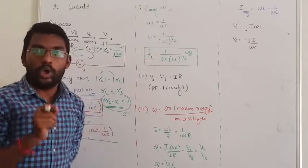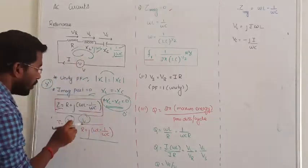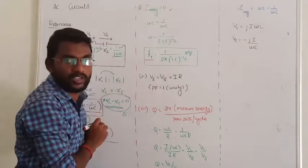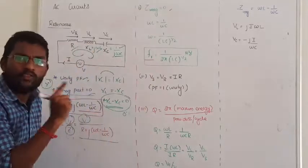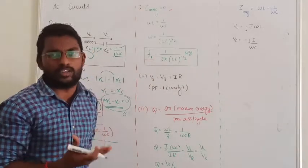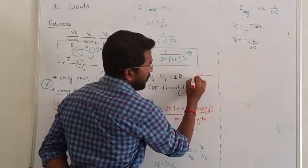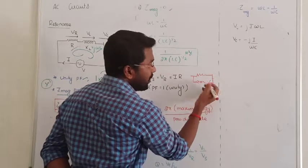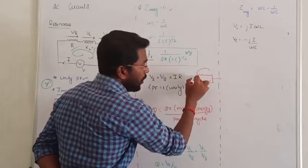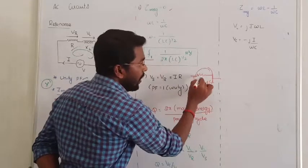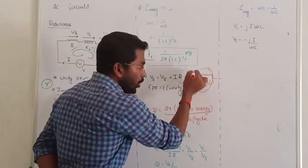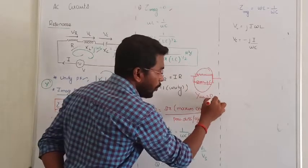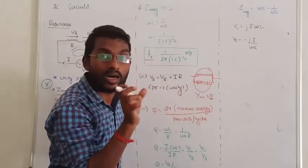Now, one more thing. From what we know about a series RLC circuit, total impedance gives us this expression for resonant frequency. For a parallel RLC circuit, that formula is different — it is not the same. In the parallel case, we use total admittance, and we set the imaginary part of the total admittance equal to zero. That gives the resonance frequency.